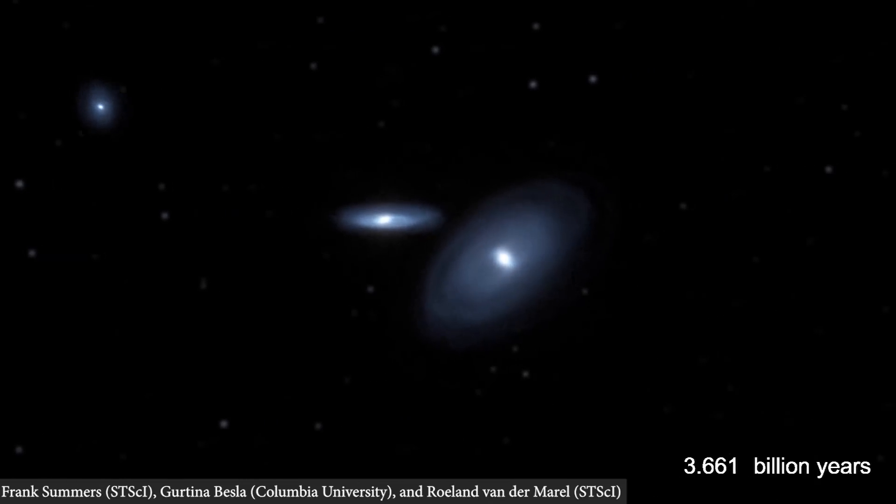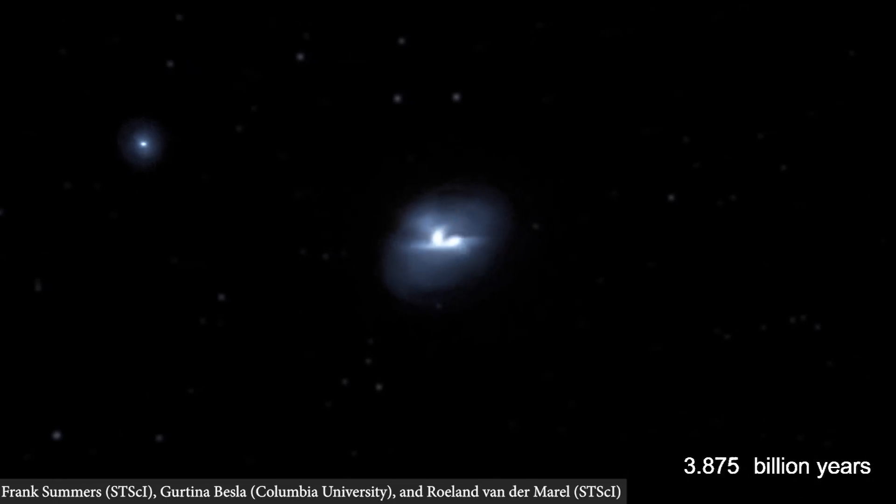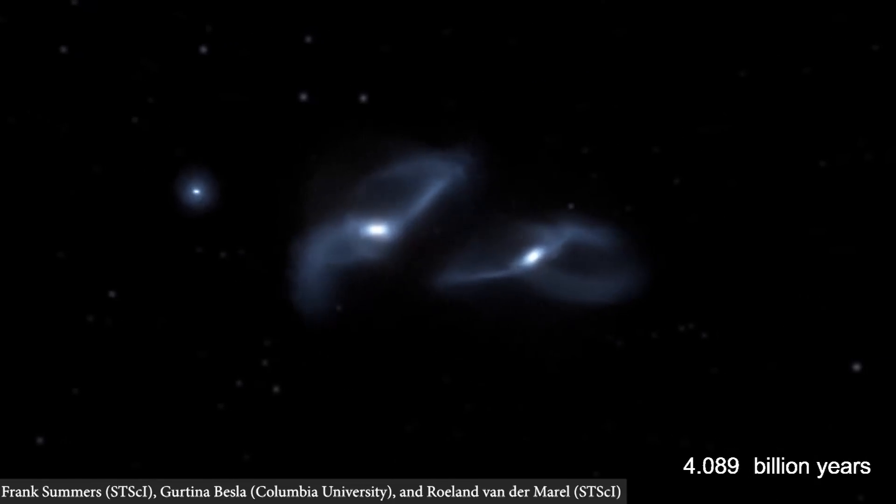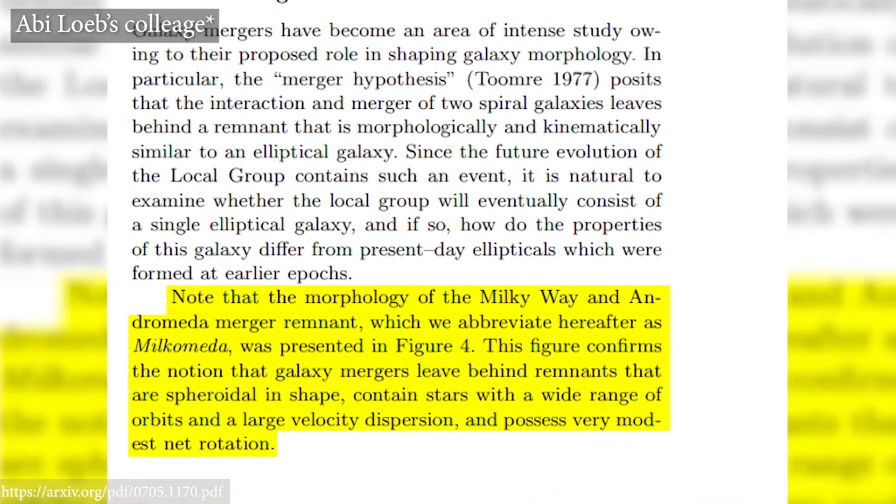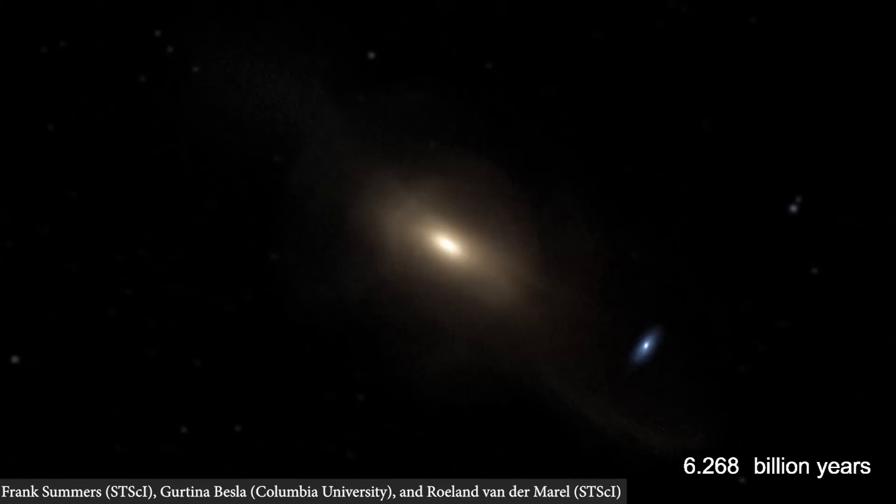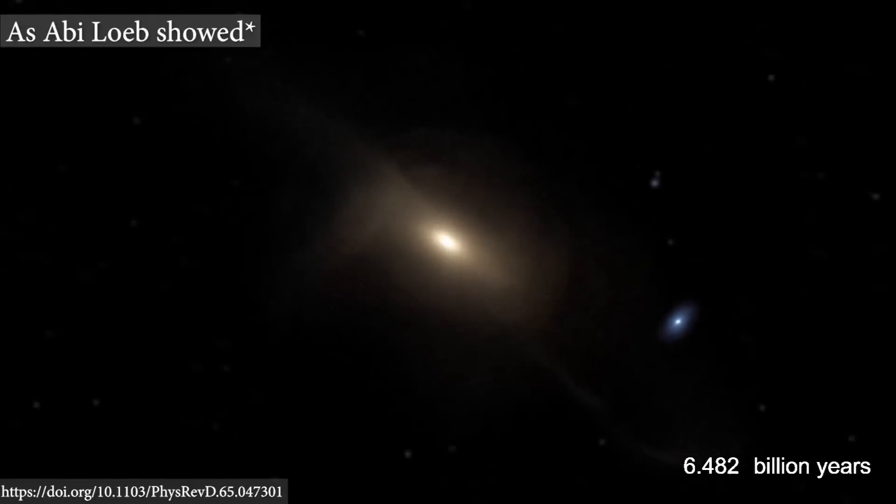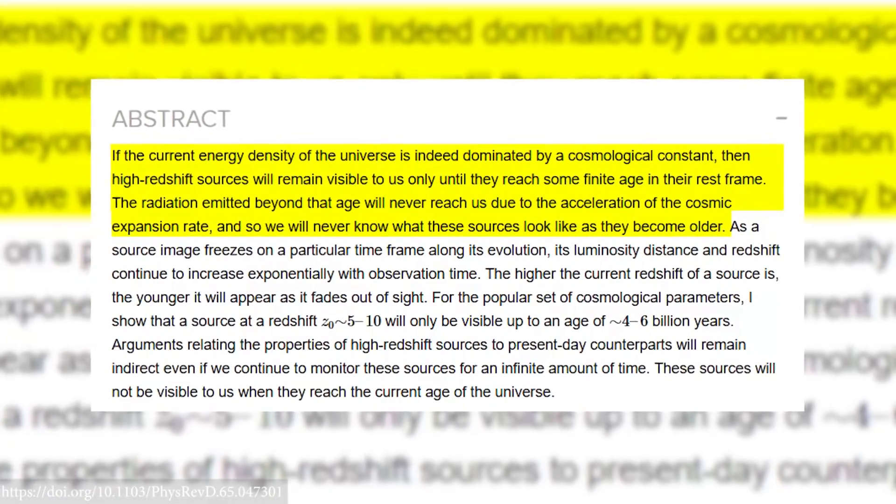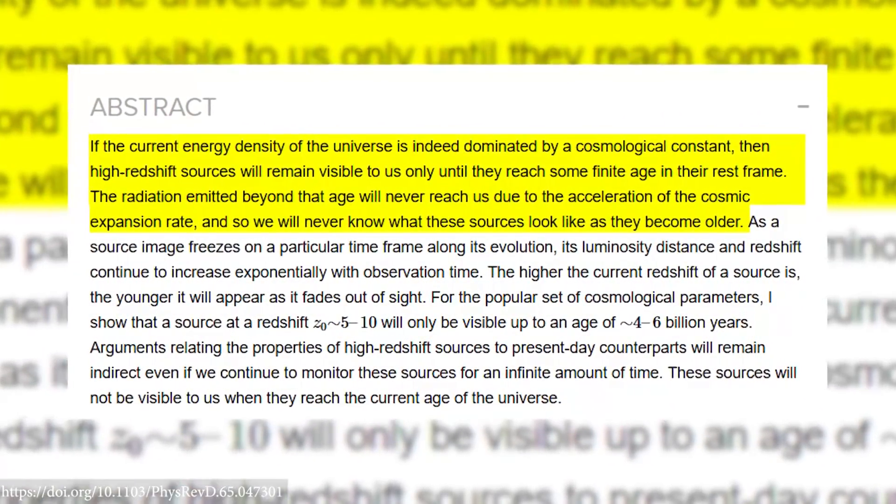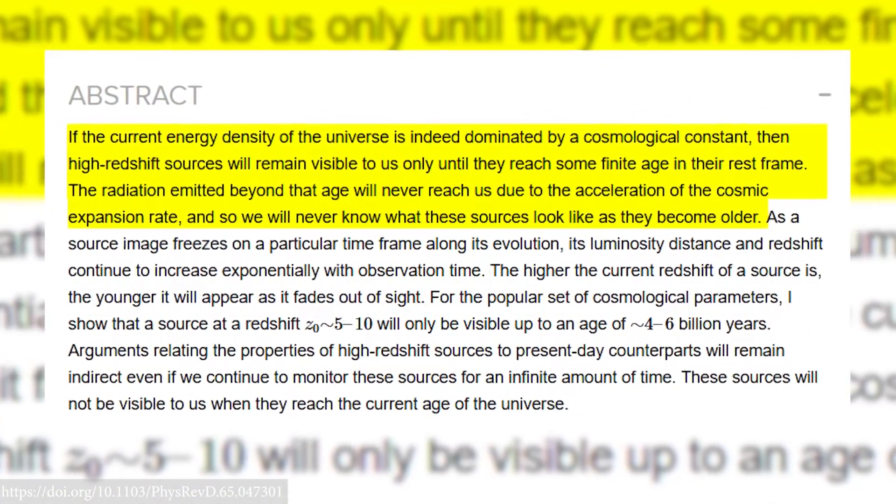All galaxies beyond Milcomeda, the result of an eventual merger between Milky Way and Andromeda, which my colleague T.J. Cox and I named in a 2007 paper, will eventually recede away from us faster than light. As I showed in a 2002 paper, once all other galaxies leave our cosmic event horizon, nothing happening within them could affect us,